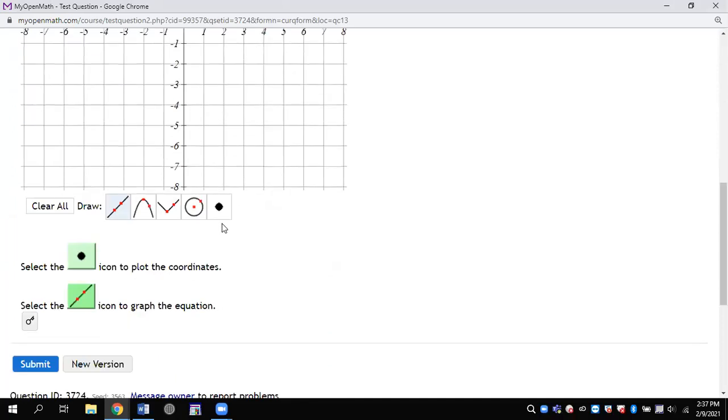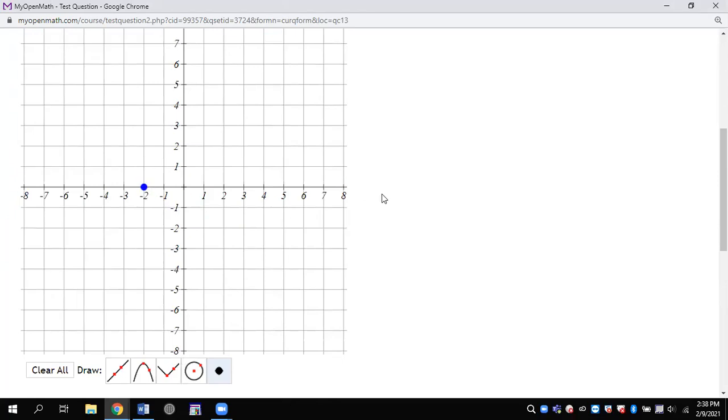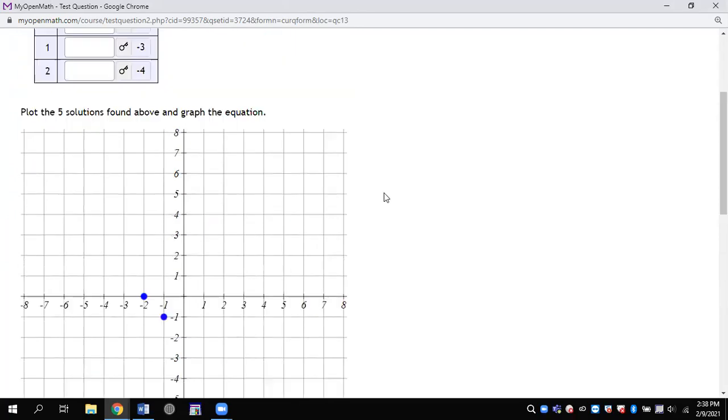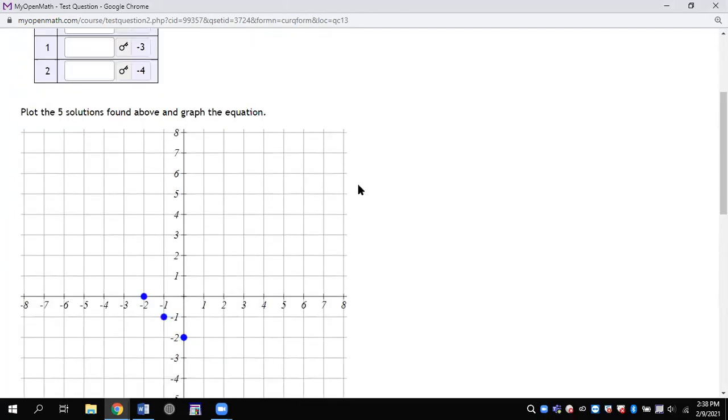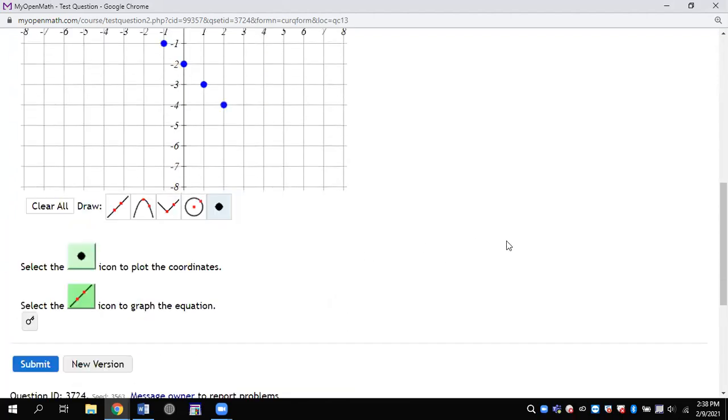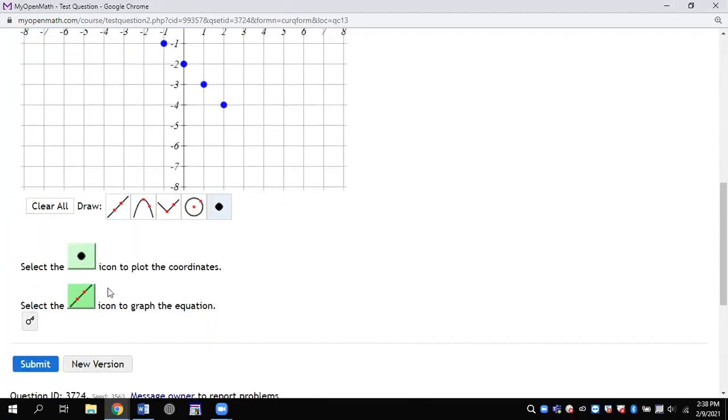So it wants me now to put those points on there. It says down here, select this icon to plot the coordinates. So I've got to select this and put the points on there. So minus 2, 0 - bonk, right there. And minus 1, minus 1 - bonk, right there. Zero, minus 2 - bonk, right there. Over 1, down 3 - boom, right there. Over 2, down 4 - boom, right there.